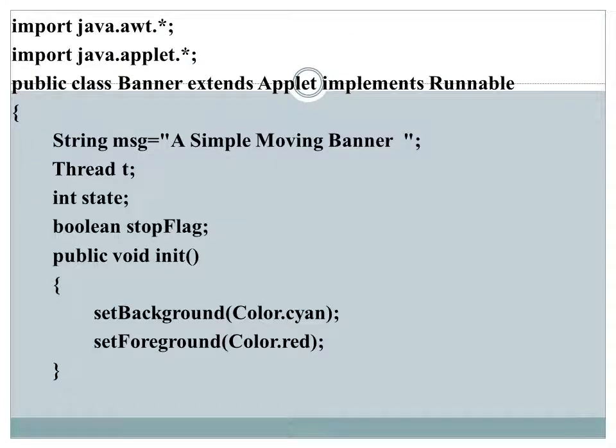For this program, first import the required packages. In addition to extending Applet, there is the keyword implements Runnable. To understand this, you should know what an interface is — covered in the third module. An interface is similar to a class but consists of method signatures only, with no logic. If you want to make use of an interface, your program should implement it and override its methods.